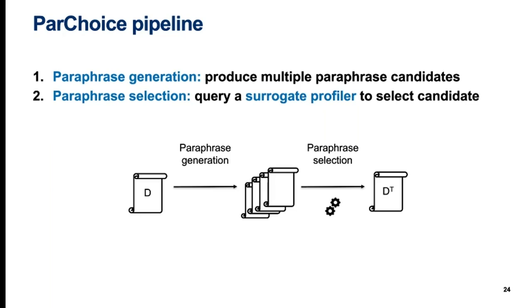Now I'll go through the main aspects of the ParChoice technique. It has two parts: first, paraphrase generation, which produces a large number of candidate paraphrases and is independent of the style transfer task; and secondly, paraphrase selection, which is a task-specific selection from among the candidate paraphrases based on how well they are able to evade a surrogate profiler, which can be the same as or different from the targeted author profiler we aim to evade.